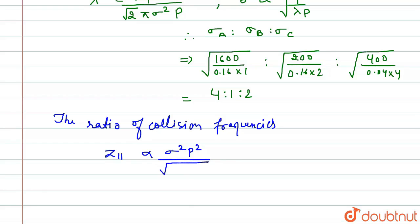Z_11 is directly proportional to σ² p² / √(mT^(3/2)). Therefore we have A : B : C ratio.